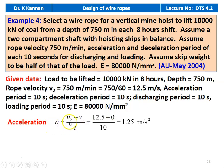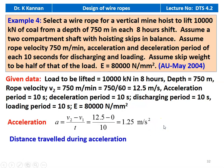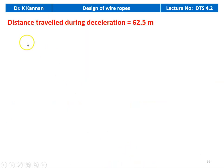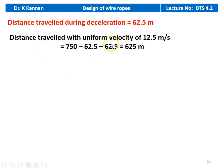Acceleration A equal to (V2 minus U) divided by T: 12.5 minus 0 divided by 10 equal to 1.25 meters per second squared. Distance traveled during acceleration equals 1/2 into a into t squared: 1/2 into 1.25 into 100 equal to 62.5 meters. Similarly, distance traveled during deceleration is also 62.5 meters. Distance traveled at uniform velocity of 12.5 meters per second equals total 750 minus 62.5 minus 62.5 equal to 625 meters.